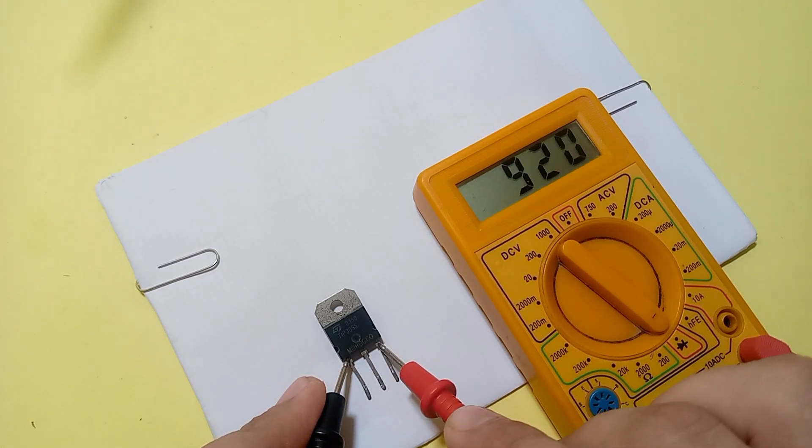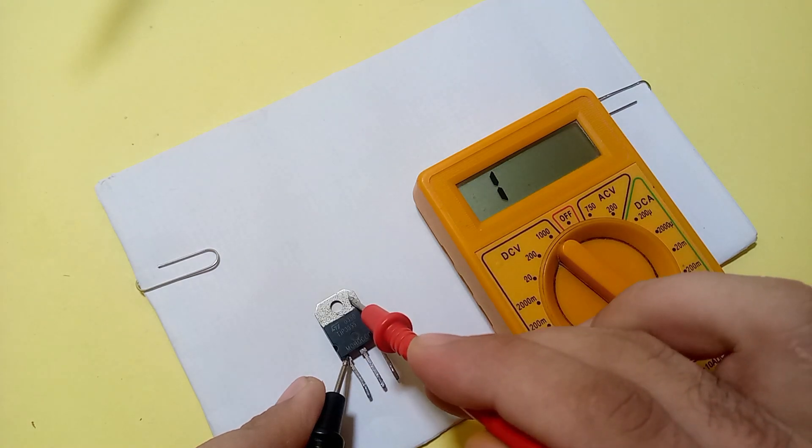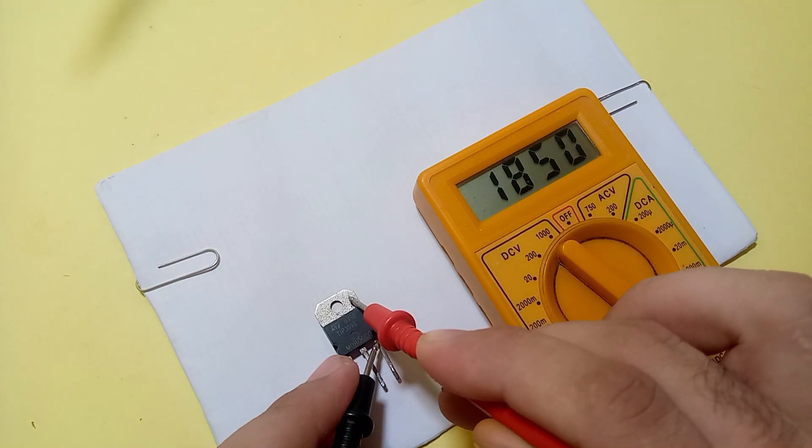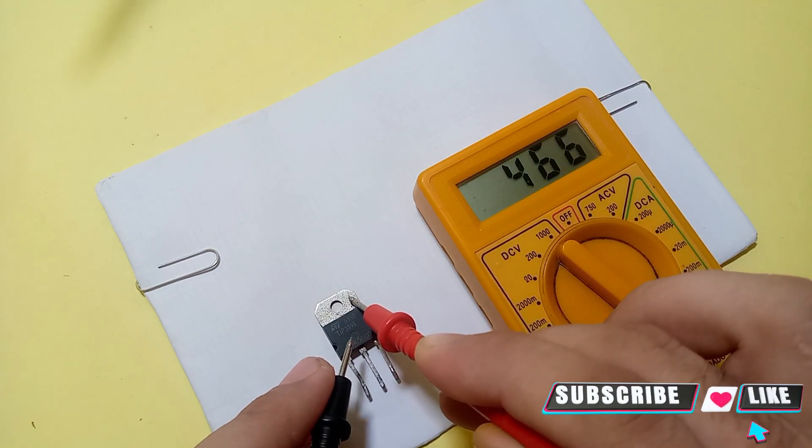If we change the polarity, look how it behaves. Now look carefully—it also shows a reading although we changed the polarity. This clarifies that the transistor is not working and is burnt out. If you're interested to learn more, visit my channel.